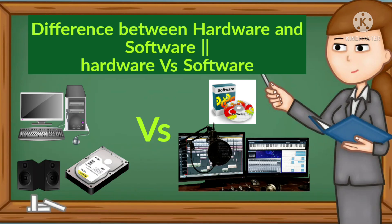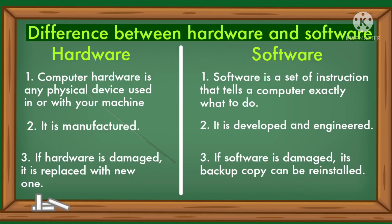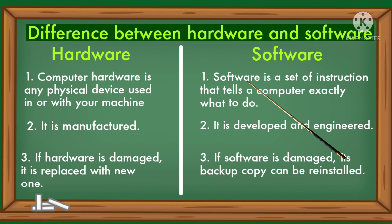Hello all, today we will learn the difference between hardware and software. Computer hardware is any physical device used in or with your machine. Software is a set of instructions that tells a computer exactly what to do.